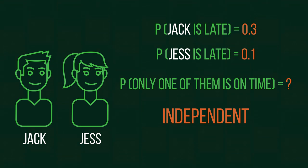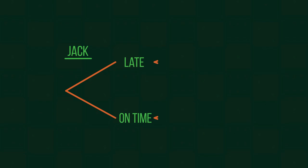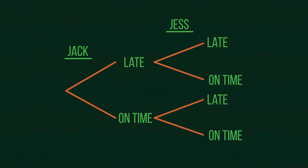So firstly, we need to draw out our tree diagram. We have two events, each with two possible outcomes. So our diagram should look like this. We can then input our probabilities onto the branches. Because the likelihood of Jack being late is 0.3, his probability of being on time is 0.7. This is because all the potential outcomes must add up to one.